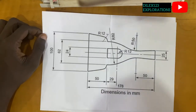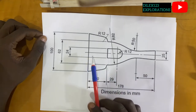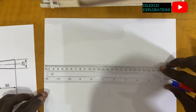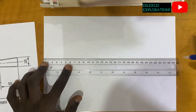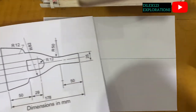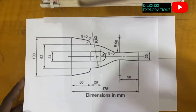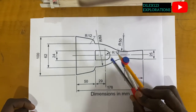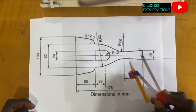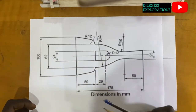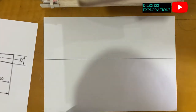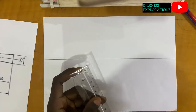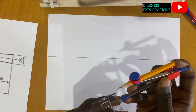The first thing we have to do will be to produce this horizontal 178 millimeter line. After having done that, the next thing I want to do will be to construct this semicircle. R12 means that the radius of this semicircle is 12. We can stand anywhere on the horizontal line and then construct a semicircle with a radius of 12 millimeters.